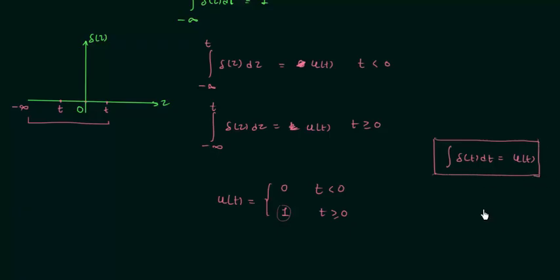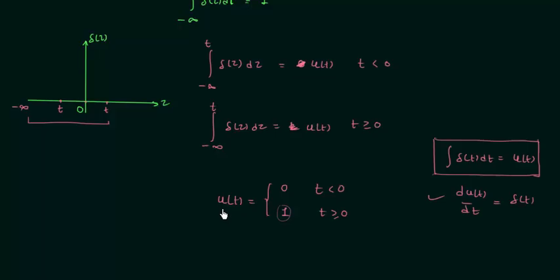When two functions are related by integration, they are also related by differentiation. So if we differentiate the unit step signal we will have the unit impulse signal. Now we will try to obtain this result using a different approach.